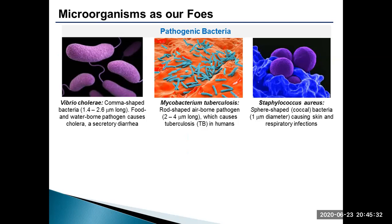First discovered in 1882, Mycobacterium tuberculosis is a rod-shaped bacteria that causes a serious respiratory disease called tuberculosis. More than two lakh people in India die every year due to tuberculosis. The bacteria spreads through air droplets from infected people through coughing, sneezing and speaking. Staphylococcus aureus, a spherical-shaped bacterium, is a member of the microbiota of the body, usually found in the upper respiratory tract and on the skin. It can cause a range of illnesses from minor skin infections like pimples and boils to life-threatening diseases such as pneumonia, meningitis and sepsis.